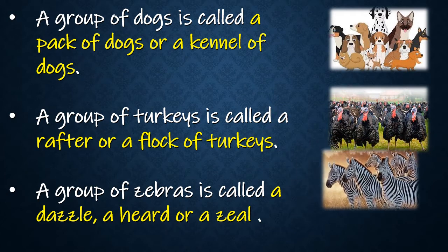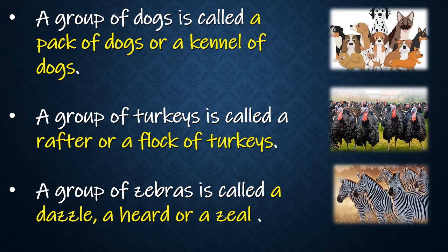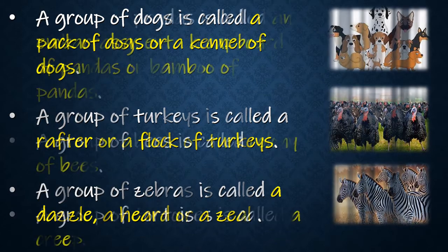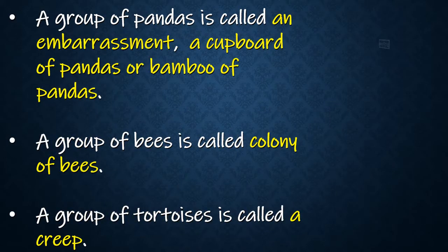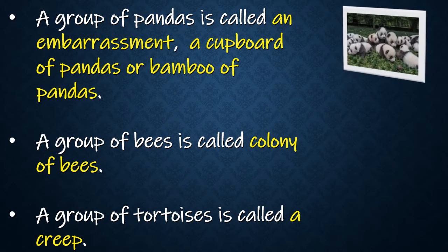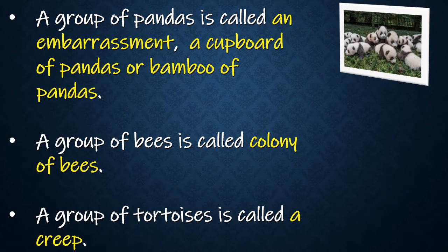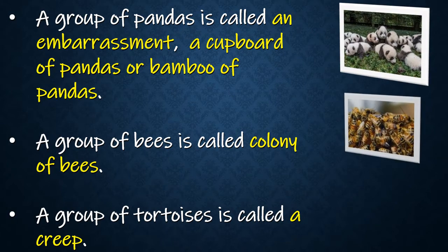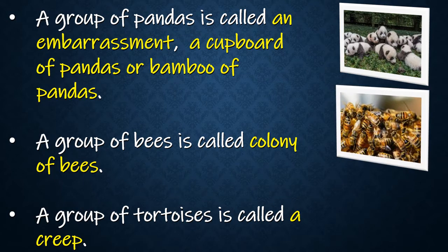A group of turkeys is called a rafter or flock of turkeys. A group of zebras is called a dazzle, a herd, or a zeal. A group of pandas is called an embarrassment, a cupboard of pandas, or a bamboo of pandas. A group of bees is called a colony of bees.